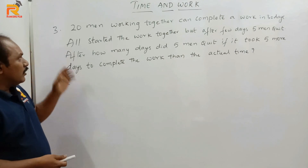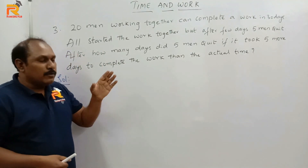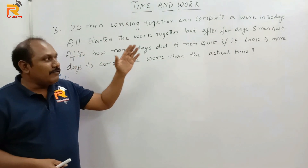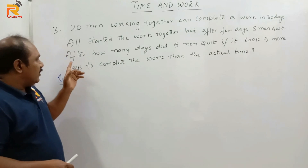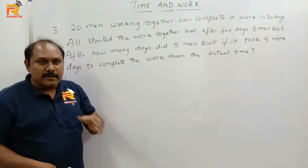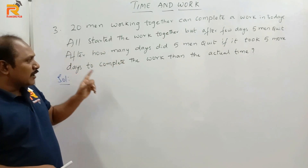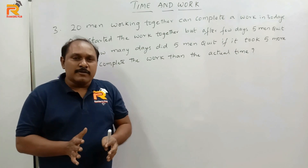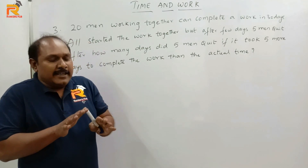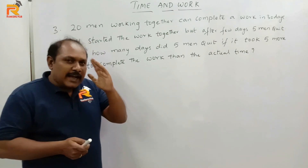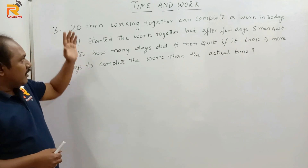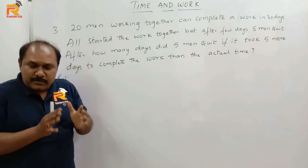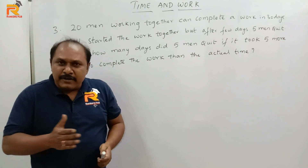Let us see the third question. 20 men working together can complete a work in 30 days. All started the work together but after few days 5 men quit. The question is after how many days did 5 men quit, if it took 5 more days to complete the work than the actual time. How to answer this particular question in a very simple way? Let us think generally. If 20 men can complete the work in 30 days, initially there are 20 men and each person should be working for 30 days.